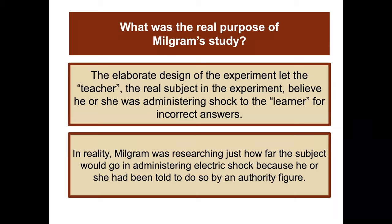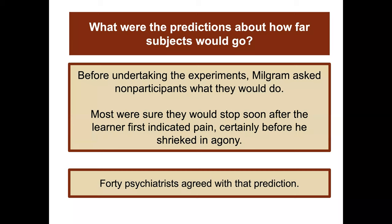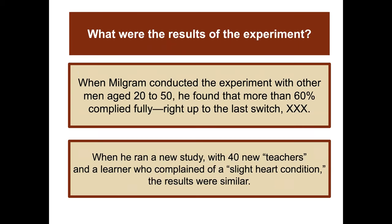The elaborate design let the teacher — the real subject — believe he or she was administering shocks for incorrect answers. In reality, Milgram was researching just how far the subject would go because an authority figure told them to. Before the experiment, most people predicted they would stop soon after the learner first indicated pain, certainly before he shrieked in agony — and 40 psychiatrists agreed with that prediction. But the results were literally shocking. When Milgram conducted the experiment with men aged 20 to 50, more than 60% fully complied right up to the last switch — the 450-volt XXX switch.